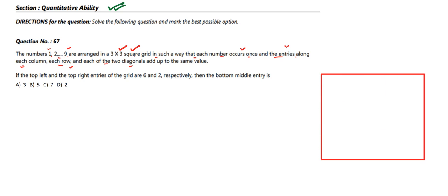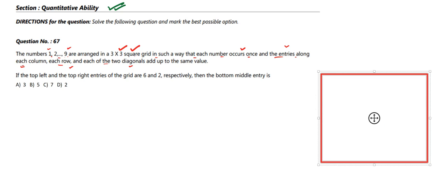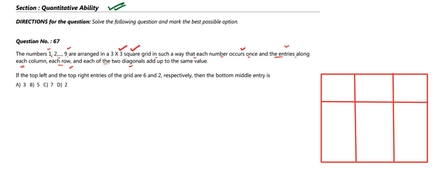Let's draw our 3x3 square grid. Here we have the border of the grid divided into 3 columns and 3 rows. The condition is that the sum of each column, each row, and each of the two diagonals must all be equal — basically every group of three numbers has the same sum.